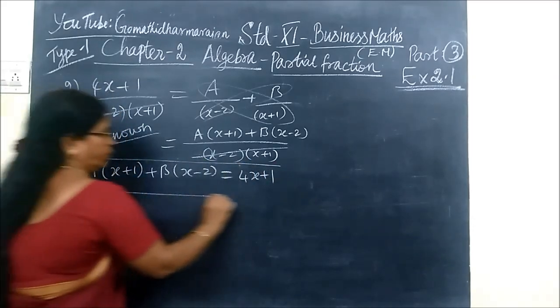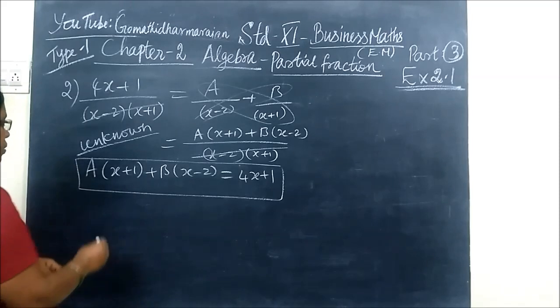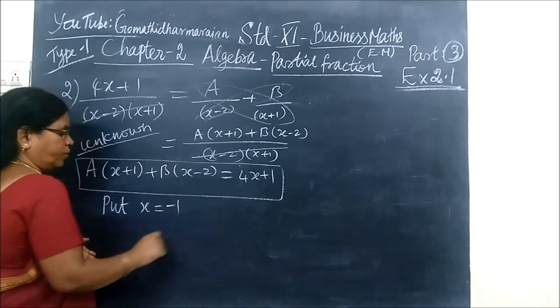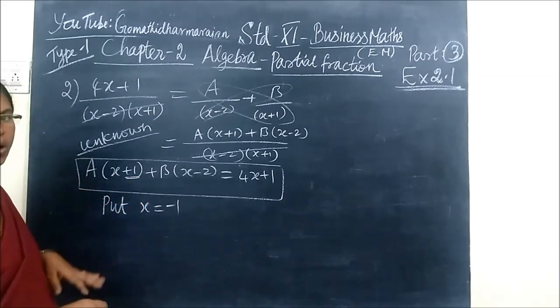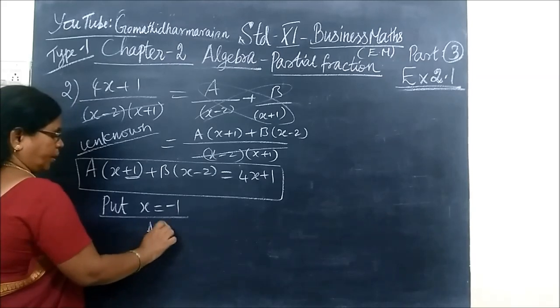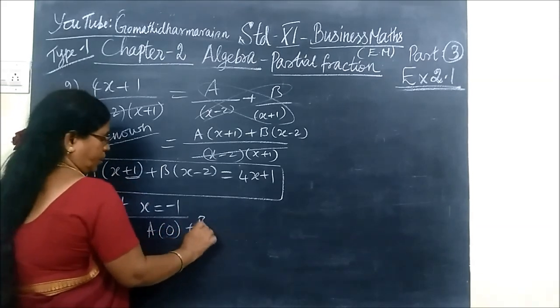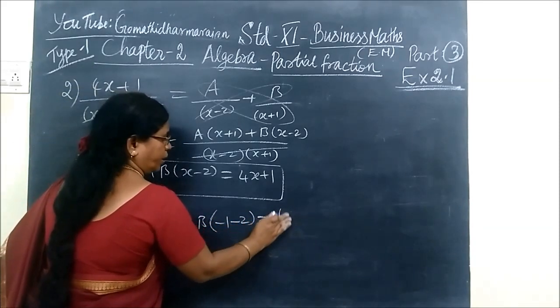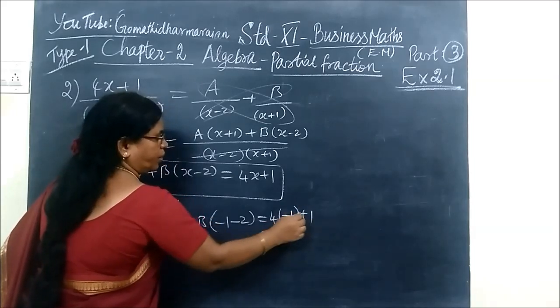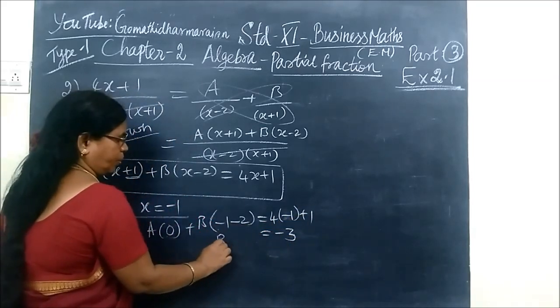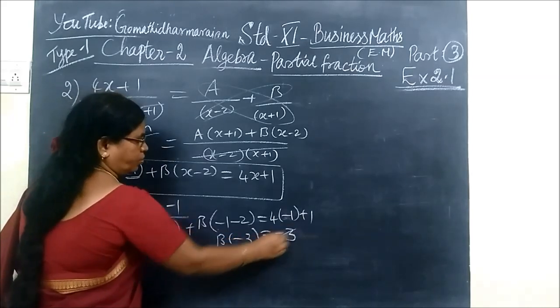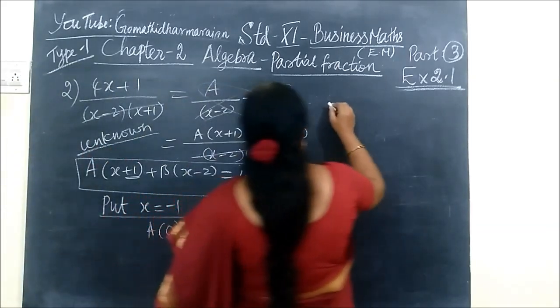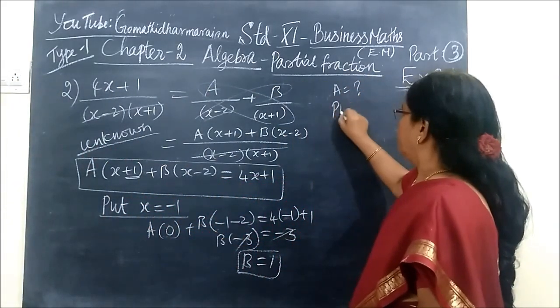Denominator cancels. A bracket x plus 1, B bracket x minus 2, equal to numerator 4x plus 1. This is the equation. Put which is easier to substitute first. Zero is around plus 1 minus 1. Put x equal to minus 1. A bracket zero here. Then B bracket, wherever x comes you are writing minus 1. Minus 4 plus 1 is minus 3. B bracket minus 3. The value of B equal to 1.